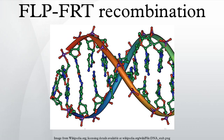Because the recombination activity can be targeted to a selected organ, or a low level of recombination activity can be used to consistently alter the DNA of only a subset of cells, FLP-FRT can be used to construct genetic mosaics in multicellular organisms.